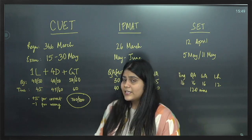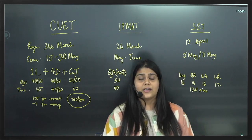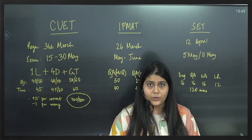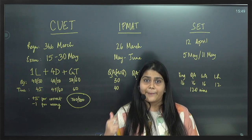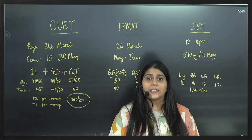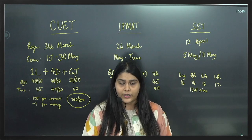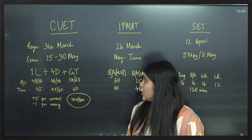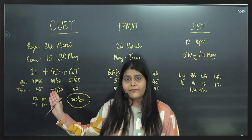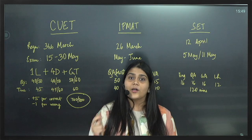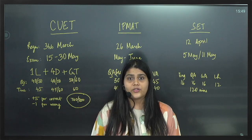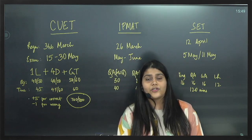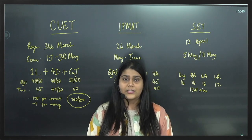The third section is the general test, which will test your logical reasoning, general quantitative aptitude — covering basic mathematics like AP/GP, sequence and series, probability, permutation and combination — as well as general awareness and analytical skills. Domain subjects are either 45 or 60 minutes depending on the subject, with 50 questions of which 40 must be attempted. For the general test there are 60 questions of which you must attempt 50 in 60 minutes.